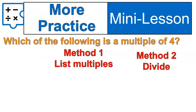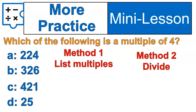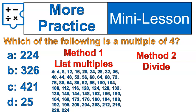Here's a bit more of an example here with the number 4. Which of the following is a multiple of 4: 224, 326, 421, or 25? Now, the challenge with this one is that the numbers are larger. So now you'll see method 1 of listing multiples becomes somewhat problematic. I did go ahead and list all of the multiples of 4 until I finally got up to 224. But you can see that that would take a lot more time. And in this case, using division would actually be a lot quicker.